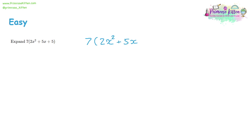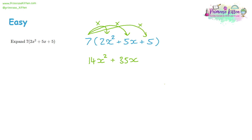We can also have more complicated things inside the brackets — additional terms. This time we've got three terms: 7 lots of 2x² plus 5x plus 5. Multiply 7 by 2x²: 7 times 2 is 14, giving 14x². Then 7 times 5x is 35x. And 7 times 5 is 35. An extra term inside is just one extra multiplication — it's not actually more difficult.